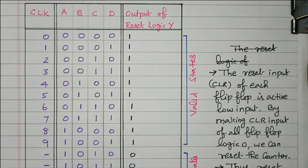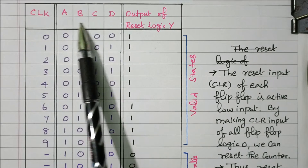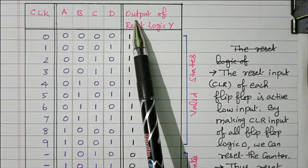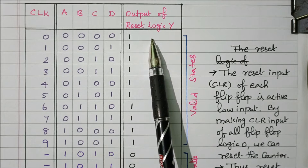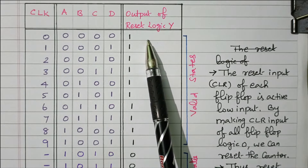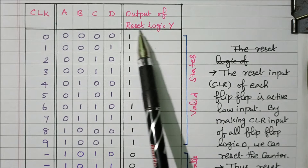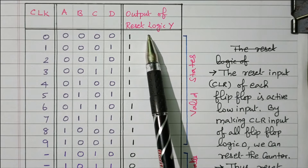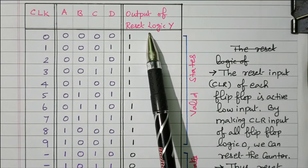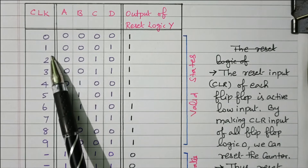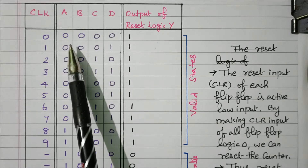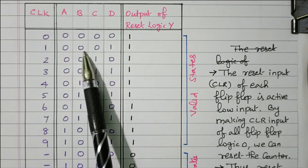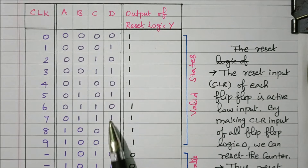This is the truth table for the mod-10 counter. The columns are clock pulse, A, B, C, D — 4 digits. We need to find the output of the reset logic because for 0 to 9 we need the output, but from 10 to 15 we don't need the output. So we need to reset the flip-flop, and we need to identify what is the reset logic Y. The clock pulse goes from 0 to 9 — 10 combinations are available.